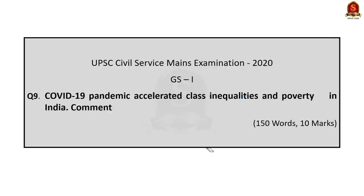Today, before going to the newspaper analysis, I will discuss two mains questions from the 2020 GS paper one. In the first question, I will try and show you how to integrate current affairs in your mains answer. In the second question, I will try and show you how to generate points. Constructive criticism regarding this session is always welcome in the comment section — it will help me grow and bring you better mains answers in the future. Interested aspirants can also post their version of the answers in the comment section.